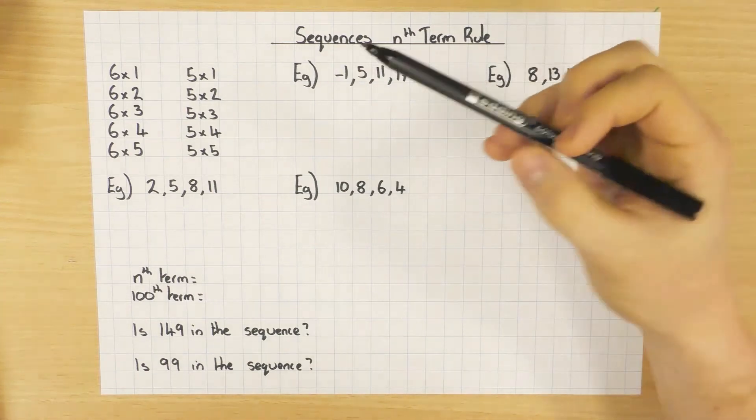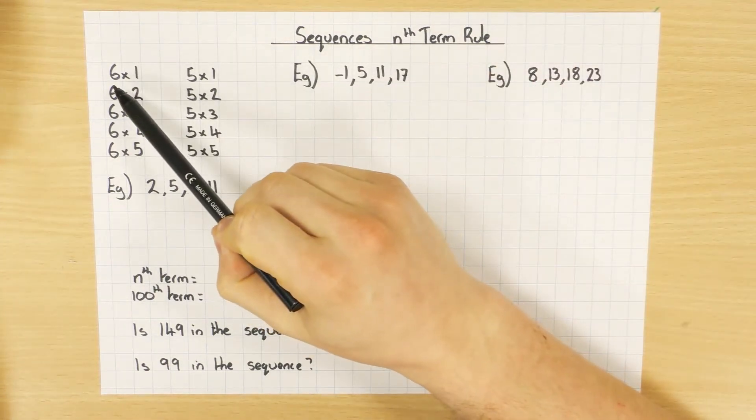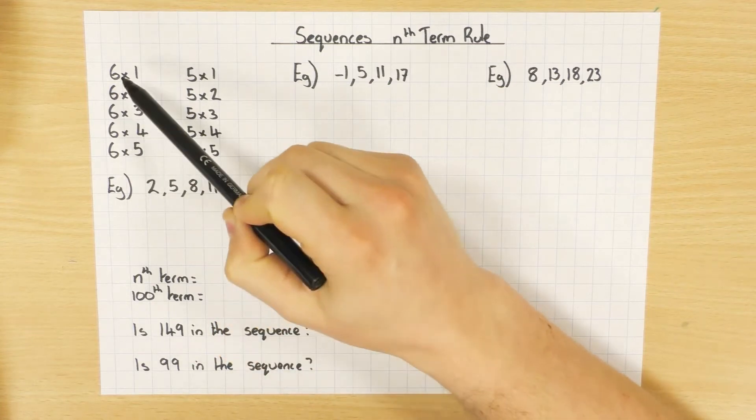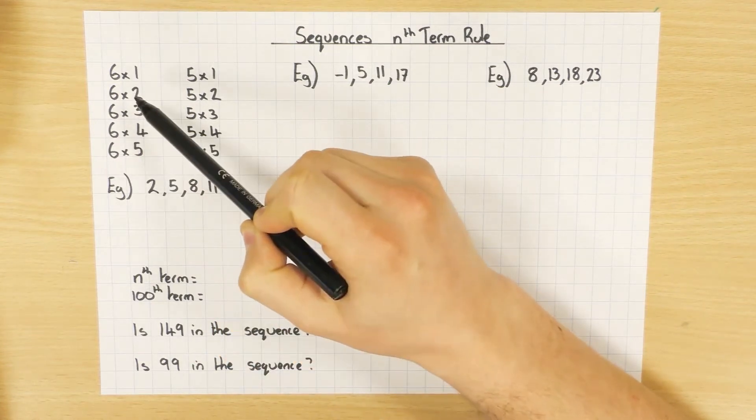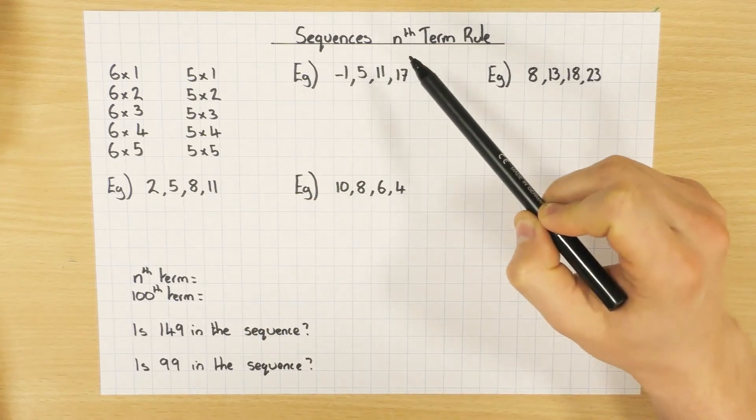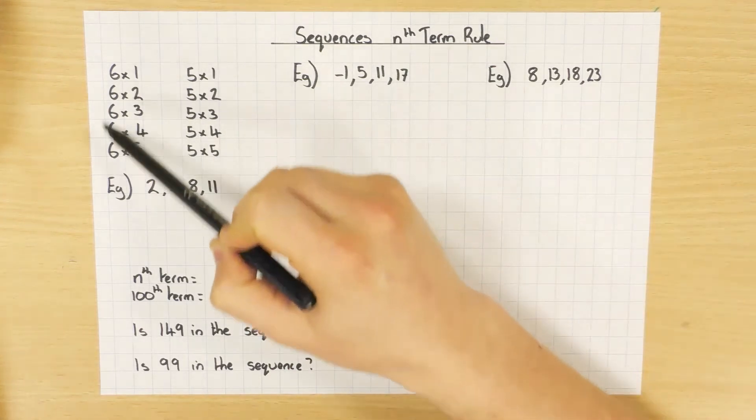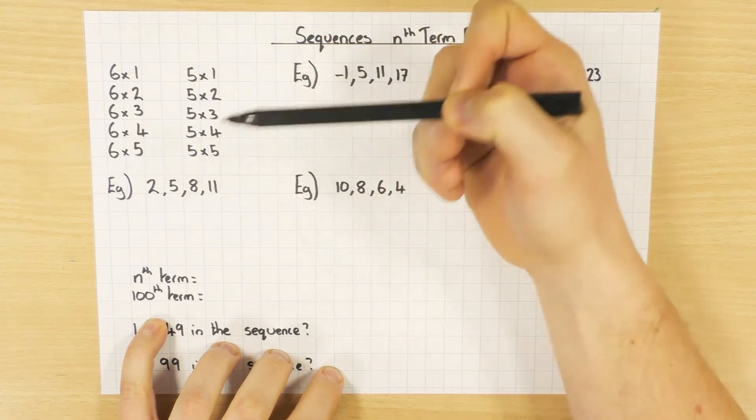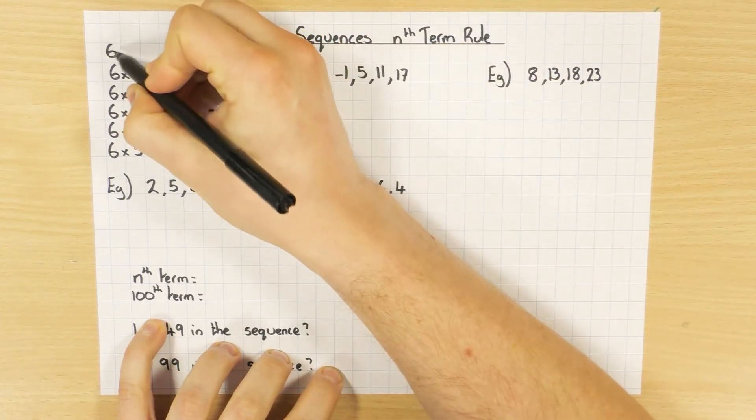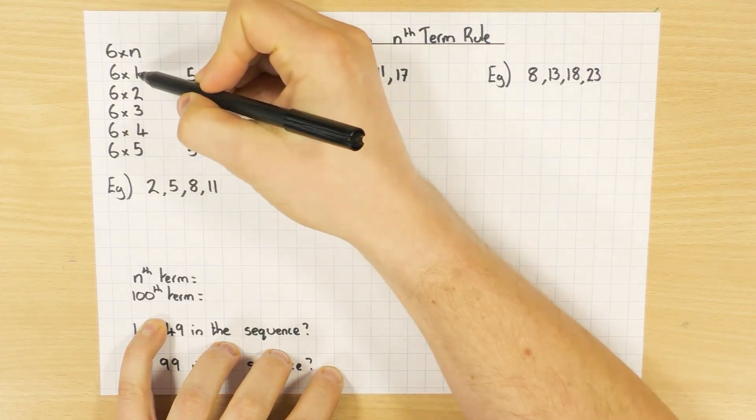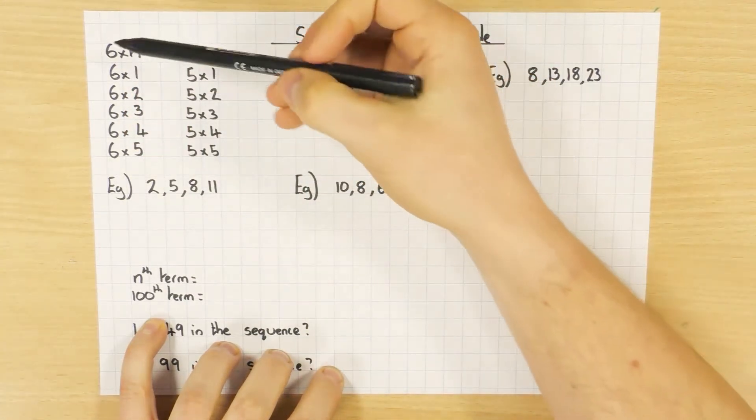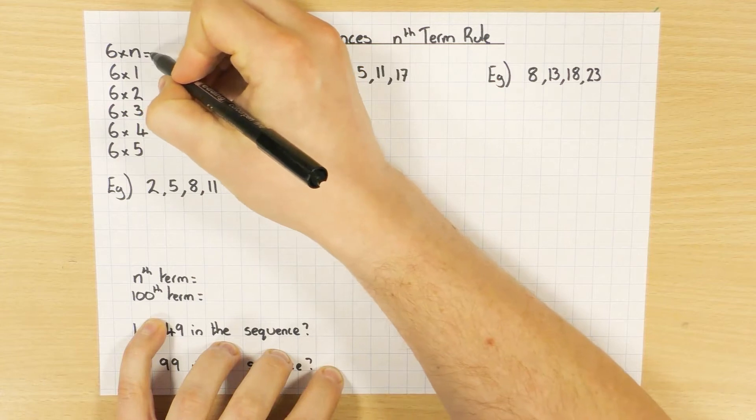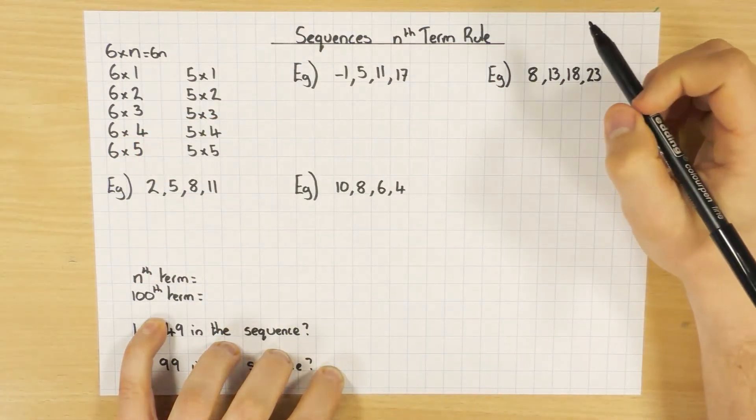First thing to say is we have to be aware of this first aspect here, so 6 times 1, 6 times 2, 6 times 3, 6 times 4, 6 times 5. This is basically how we work out the 6 times table. I want to know how we get the nth term rule for the 6 times table. Hopefully you can quite easily see that if I'm doing 6 times 1, 6 times 2, 6 times 3, a general rule would literally be 6 times n, where n is just whatever number in that times table I want. So 6 times n would give me anything in the 6 times table, and I can simplify that to be 6n. So 6 times n is just 6n.